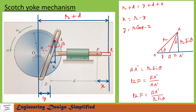When the angle theta is zero, point P assumes position P1. The distance between O and P1 is r plus d, where r is the crank radius and d is the distance from the slot center to point P. When the crank rotates by angle theta in the counter-clockwise direction, P1 assumes position P. The displacement of point P is x.